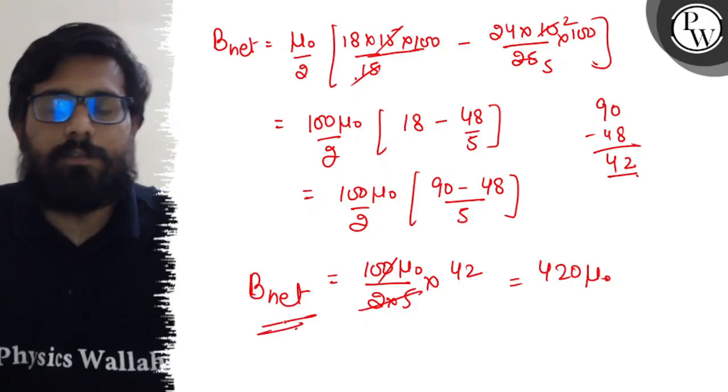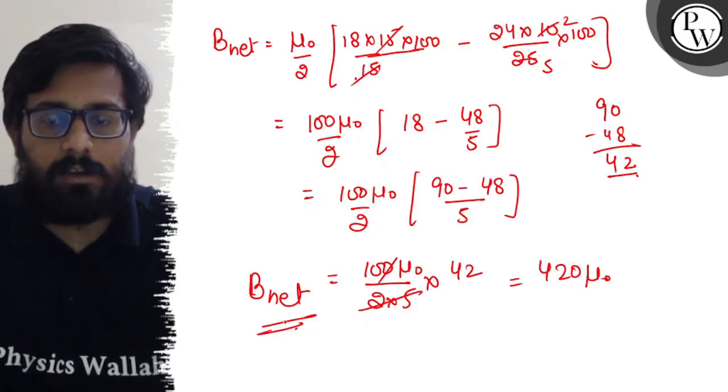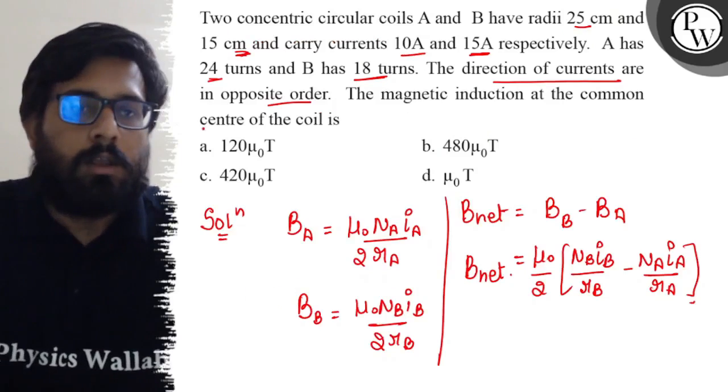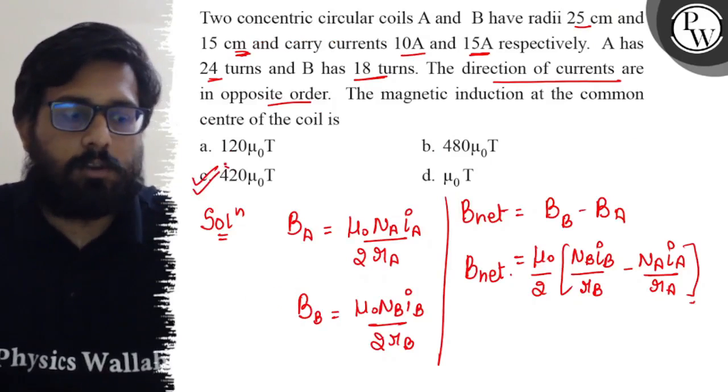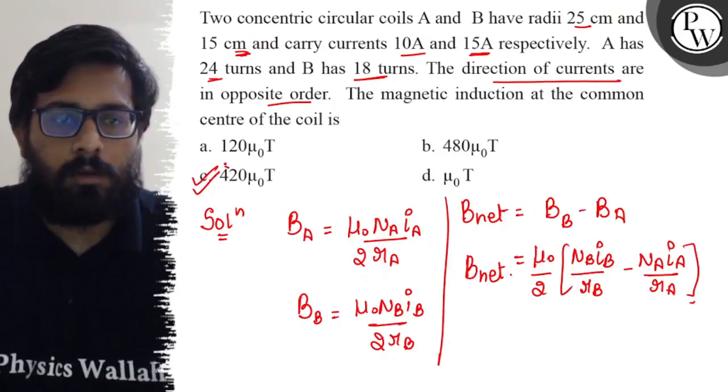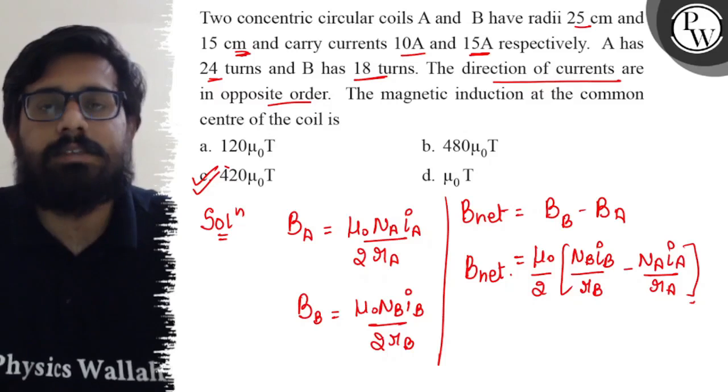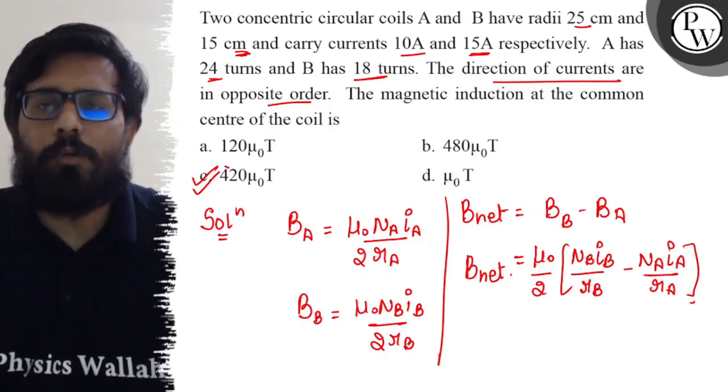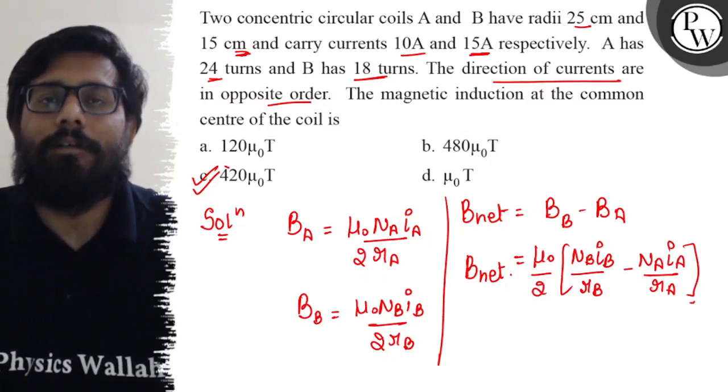So the value of net magnetic field at the center comes out to be 420 mu naught. So your C option is absolutely correct. 420 mu naught tesla is the right answer. I hope you got the concept of this question. All the very best.